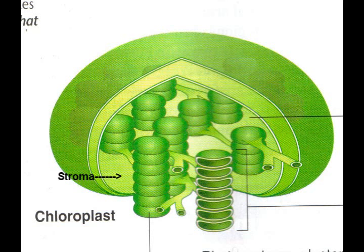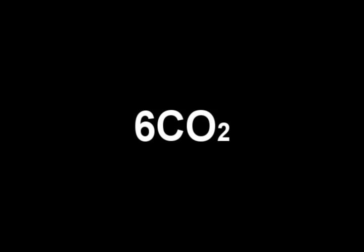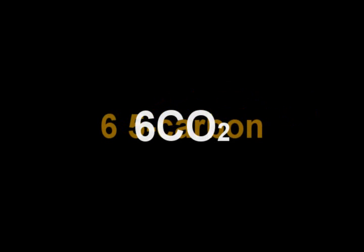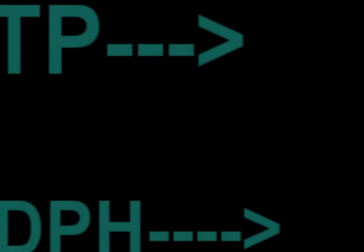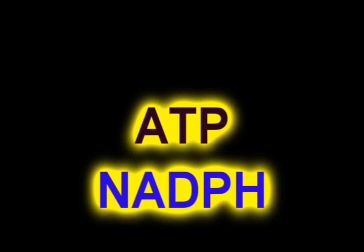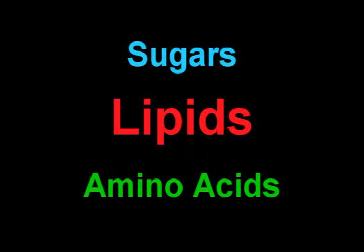The Calvin cycle begins in the stroma of the chloroplast, when six carbon dioxide molecules enter the cycle from the atmosphere. The carbon dioxide molecules combine with six five-carbon molecules. The result is twelve three-carbon molecules. These three-carbon molecules are then converted into higher-energy forms. The energy for this conversion comes from ATP and higher-energy electrons from NADPH, which came from the light-dependent reaction. Two of the twelve three-carbon molecules are removed from the cycle. The plant cell uses these molecules to produce sugars, lipids, amino acids, and other compounds needed for the plant to maintain homeostasis and to grow. The remaining ten three-carbon molecules are converted back into the six five-carbon molecules, which can then be used again to restart the process.